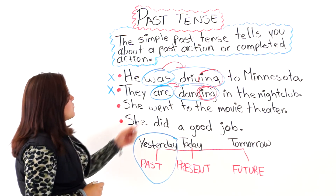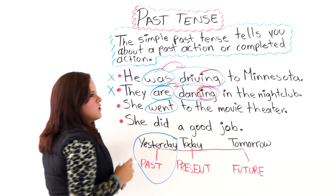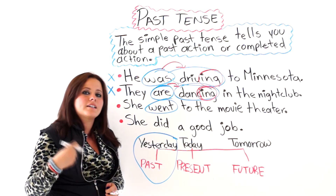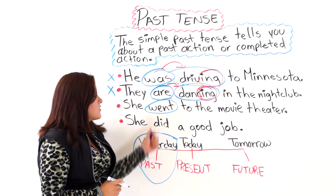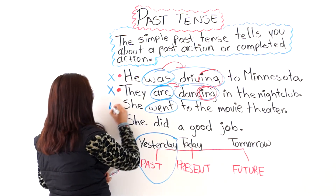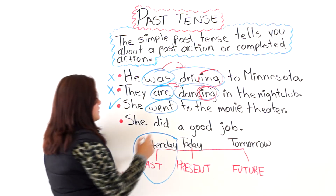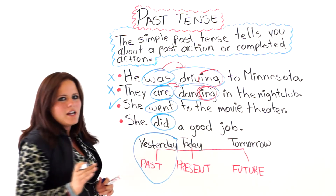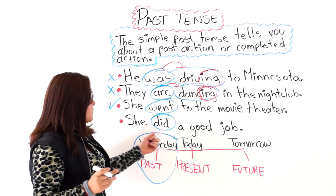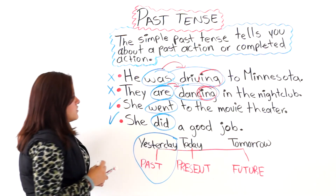The next one says: she went to the movie theater. 'Went' is the simple past of 'go.' 'Go' is the present tense, 'went' is the simple past tense, and 'gone' is the past participle. So we have one verb in the simple past tense — this is correct. And the last one says: she did a good job. 'Did' is the simple past of the verb 'do,' and the past participle would be 'done.' So we have one verb in the simple past tense, which means it is correct.